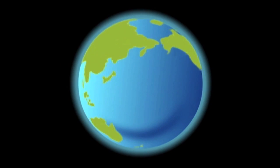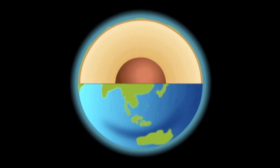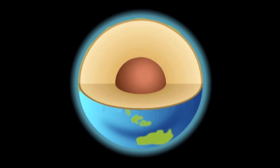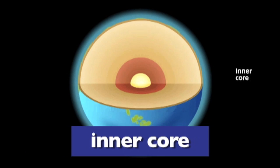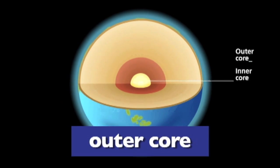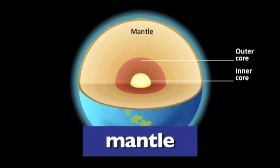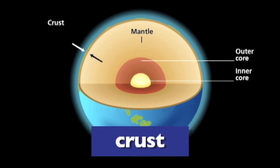To best explain how mountains are made, you need to understand that the earth is made up of different layers. A solid core in the center, a liquid outer core, and then a mantle of heavy rock which is partially liquid. The part that we live on is the crust.